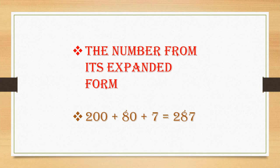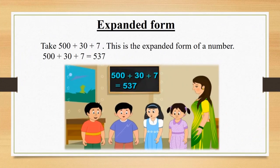Now we are going to see the number from its expanded form. You can see on your screen: 500 plus 30 plus 7. This is the expanded form of a number. 500 plus 30 plus 7 is equal to 537.